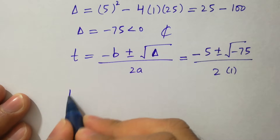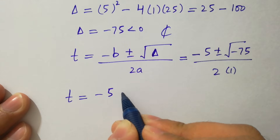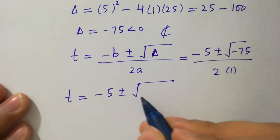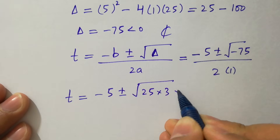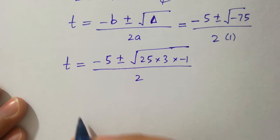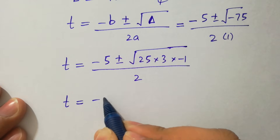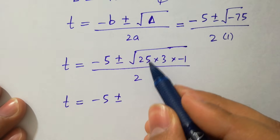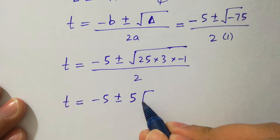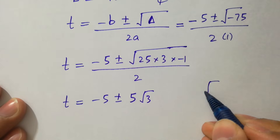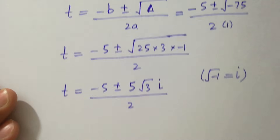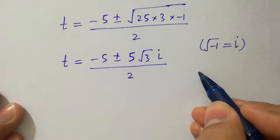Simplifying, t equals minus 5 plus or minus square root of 25 times 3 times minus 1, which gives us minus 5 plus or minus 5 times square root of 3 times square root of minus 1. Since square root of minus 1 equals i, we have t equals minus 5 plus or minus 5i√3 over 2, which is our complex solution.